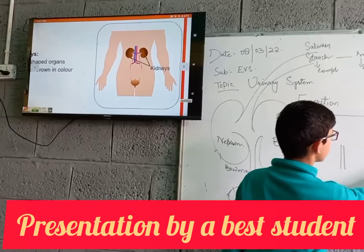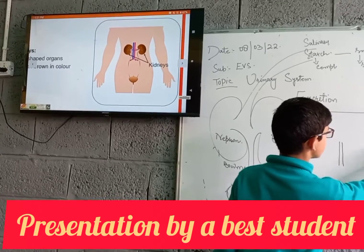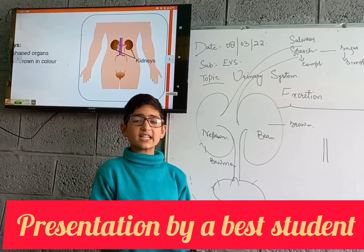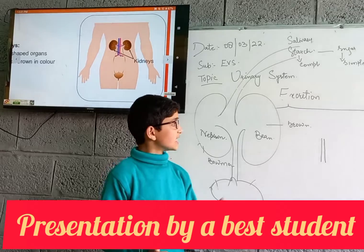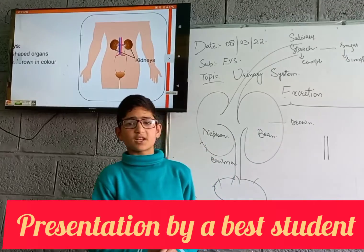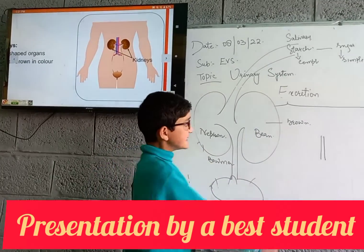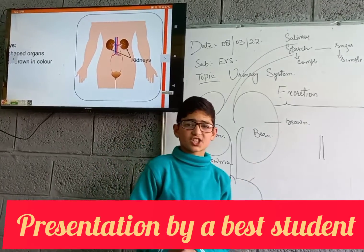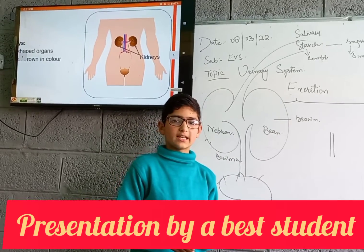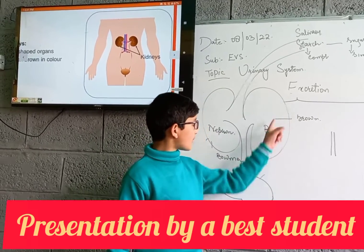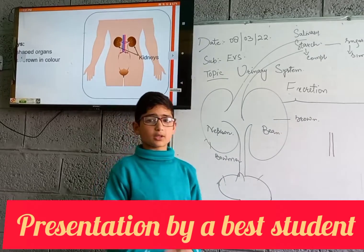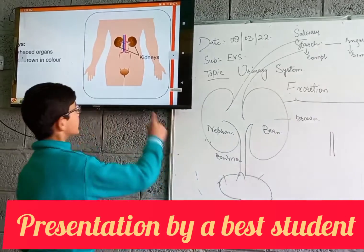First is the urinary system. Urination is the process in which we throw the liquid toxic waste from our body. Second is ejection. Inside the ejection process, we throw the solid waste from our body. And now we will study about the parts of the urinary system.